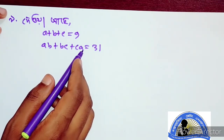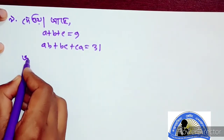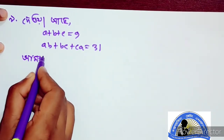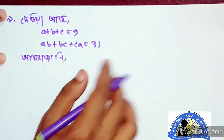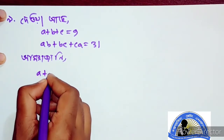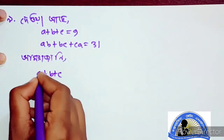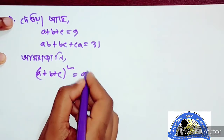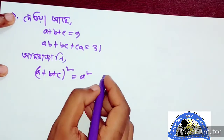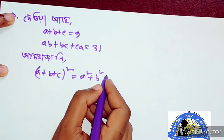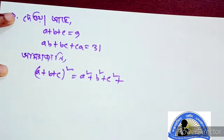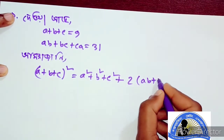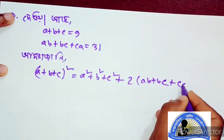Here we are talking about a squared plus b squared plus c squared. Let's see how we apply the identity: a plus b plus c, whole squared, equals a squared plus b squared plus c squared plus 2 into ab plus bc plus ca.